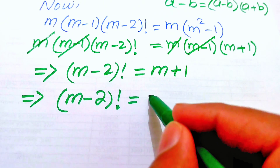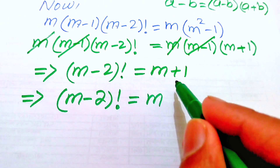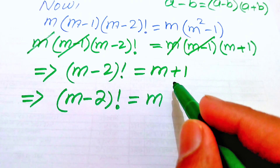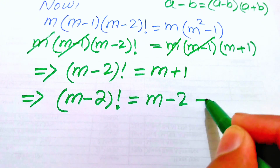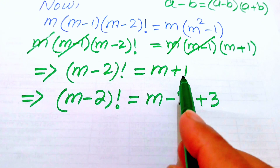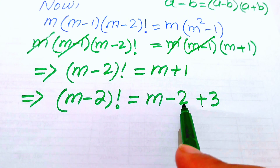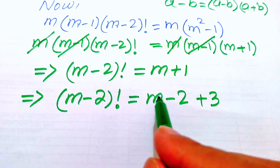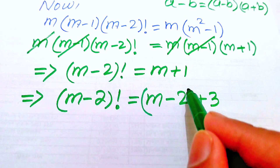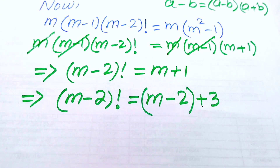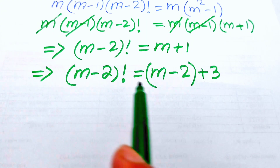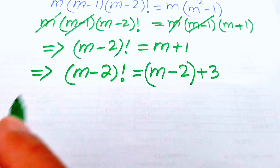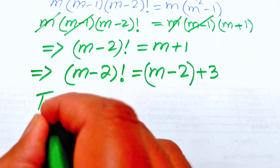We make a simplification and rewrite (m minus 2) factorial equals (m plus 1), writing m plus 1 as (m minus 2) plus 3. So we convert this factorial equation into a simplified form.